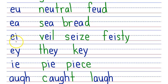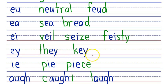You will learn about the EI phonogram that makes three sounds: A, E, and I. EI says A as in 'veil,' EI says EE as in 'sees,' and EI says I as in 'feisty.' You will learn about the EY phonogram that makes two sounds: A and EE. EY says AE as in 'they,' and EY says EE as in 'key.' You will learn about the IE phonogram that makes two sounds: I and EE. IE says I as in 'pie,' and IE says EE as in 'piece.'